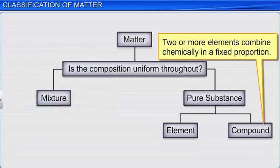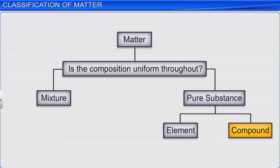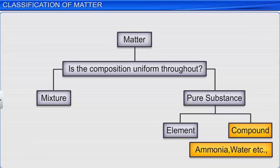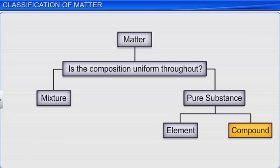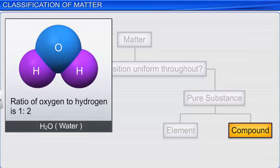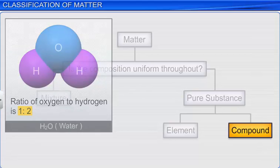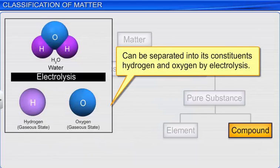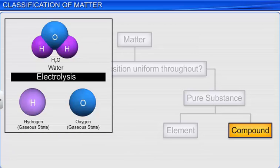Two or more elements combine chemically in a fixed proportion to form a compound. Examples of compounds are ammonia, water, etc. A compound cannot be further separated into its constituents by physical means but can be separated by chemical methods. For example, oxygen and hydrogen are present in a 1 is to 2 ratio by volume in water. And water, that is H2O, can be separated into its constituents, hydrogen and oxygen, by electrolysis, but cannot be separated into its constituents by any of the physical methods such as distillation, fractional distillation, etc.